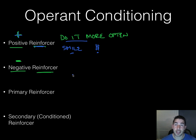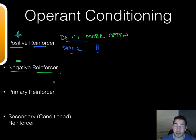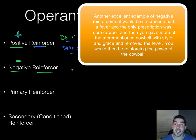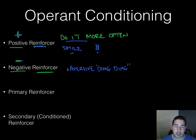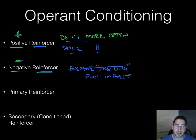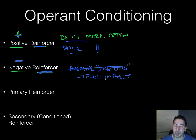Negative reinforcement means you're going to take something away — usually an aversive stimulus, something you don't like. For example, that ding, ding, ding sound when you don't have your seat belt on is aversive. By buckling your seat belt, you take away that aversive stimulus, and the behavior of buckling up is reinforced — you do it more often because you don't want to hear that sound.